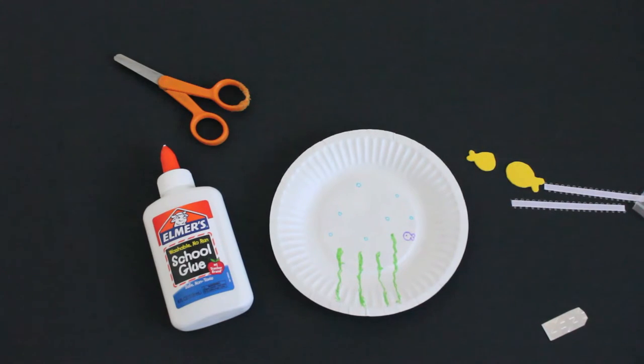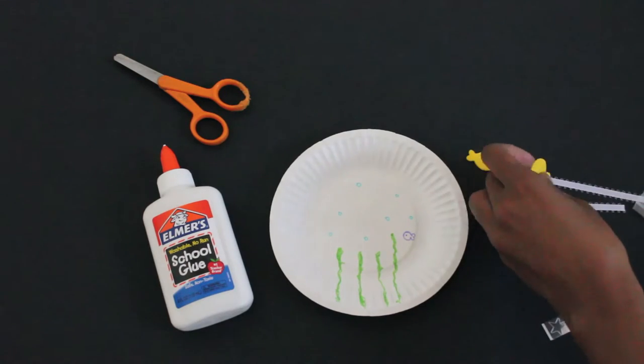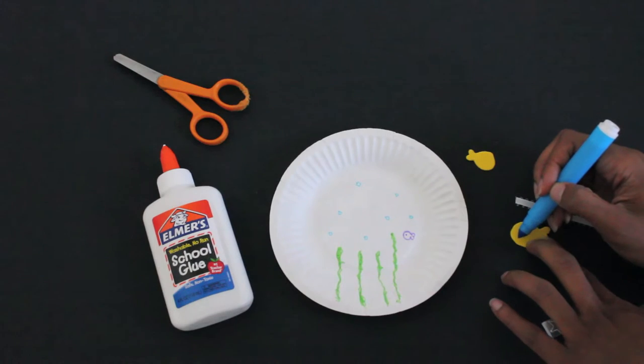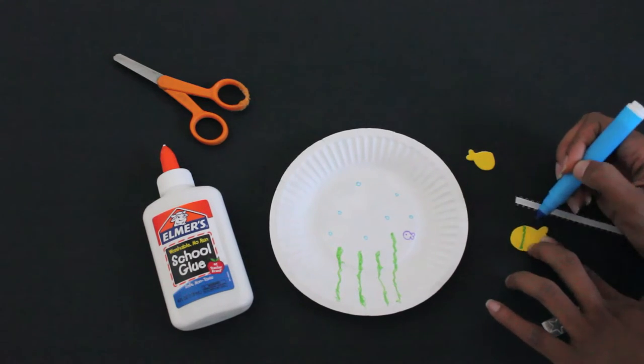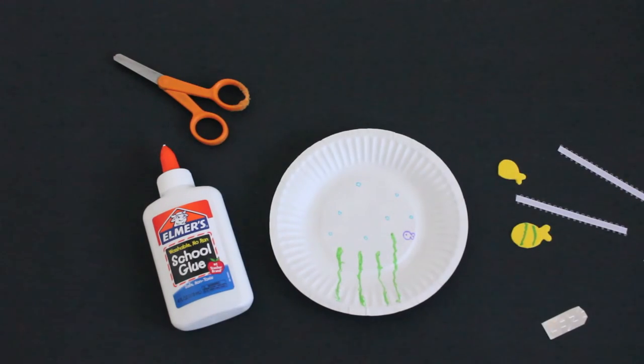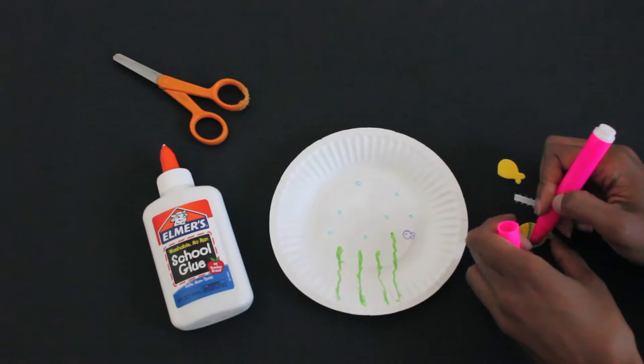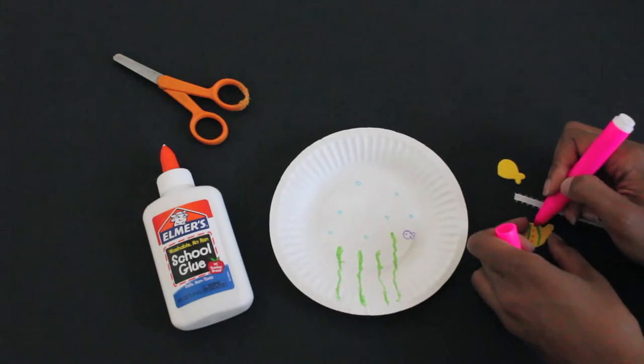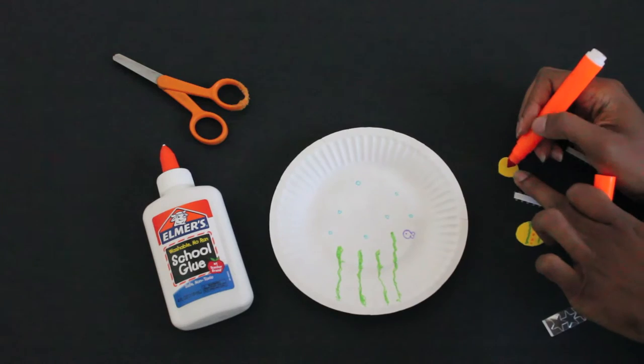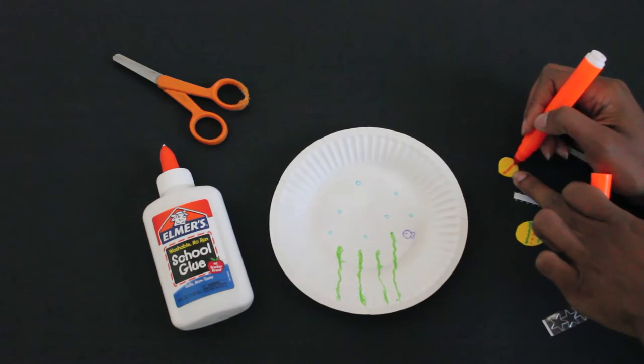Now get your little fish and decorate him however you want. So my fish, I'm going to use my markers and make some little designs. He's going to be blue. This one is going to have some pink on it too. Pink polka dots. Why not? It's my fish. This one is going to have orange. One orange line like Nemo, and an orange eye.